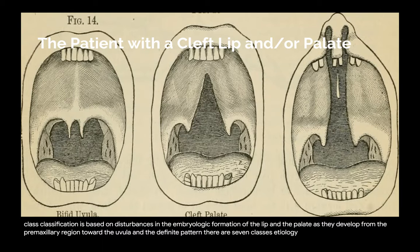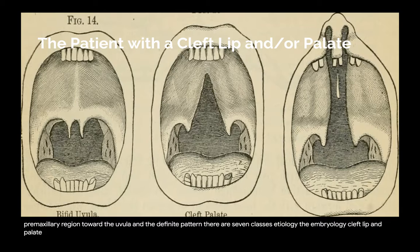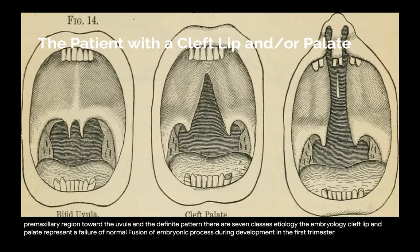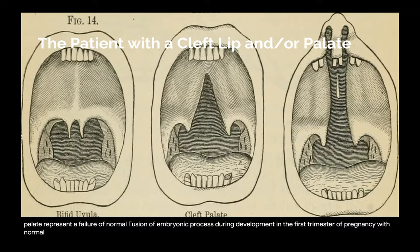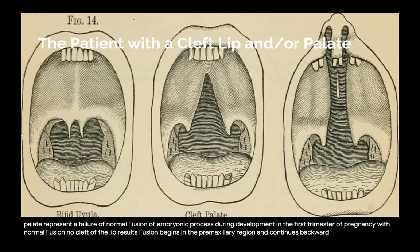Etiology: the embryology. Cleft lip and palate represent a failure of normal fusion of embryonic processes during development in the first trimester of pregnancy. With normal fusion, no cleft of the lip results. Fusion begins in the premaxillary region and continues backward toward the uvula.